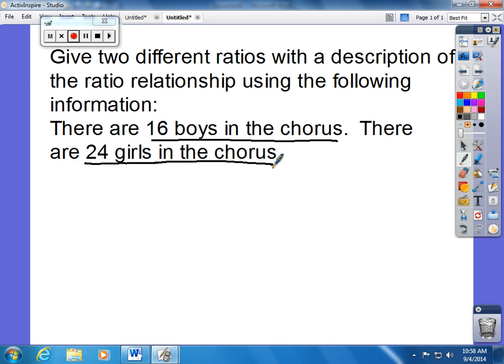The first labeled ratio I'm going to make is boys to girls, that's going to be 16 to 24. For every 16 boys there are 24 girls. You can also simplify this ratio by dividing them both by eight, and that would simplify to two to three. For every two boys there are three girls.